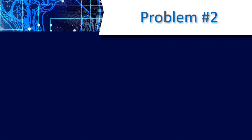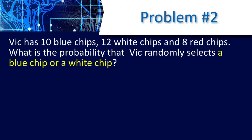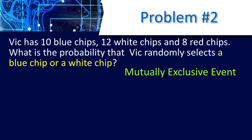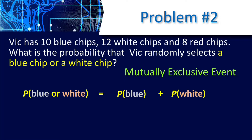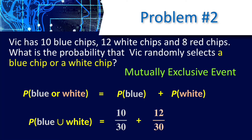Let us have problem number 2. Vick has 10 blue chips, 12 white chips, and 8 red chips. What is the probability that Vick randomly selects a blue chip or a white chip? This is a mutually exclusive event since we are selecting two different colors. P(blue or white) = P(blue) + P(white) = 10 over 30 plus 12 over 30, which equals 22 over 30, simplified to 11 over 15.